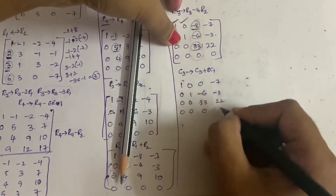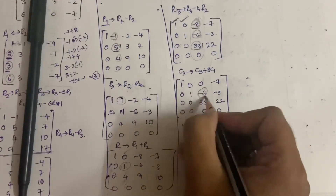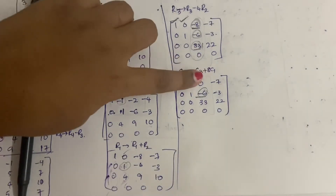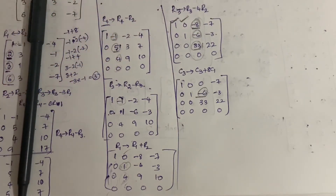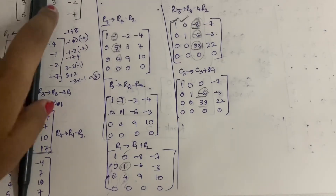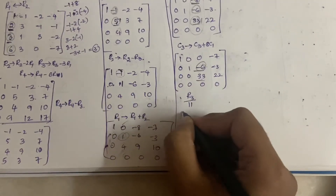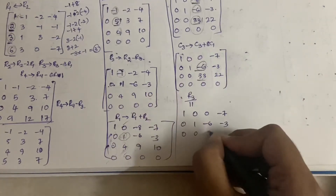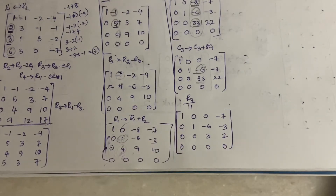Our next target is to make minus 6 as zero, but if we apply a column operation using the 33 value it may become a bigger number. So first let us reduce 33 by doing R3 divided by 11, since both 33 and 22 are divisible by 11. The matrix becomes: Row 1: 1, 0, 0, minus 7; Row 2: 0, 1, minus 6, minus 3; Row 3: 0, 0, 3, 2; Row 4: 0, 0, 0, 0.